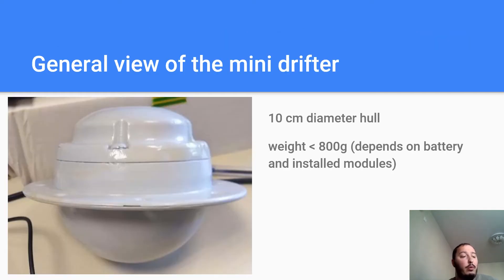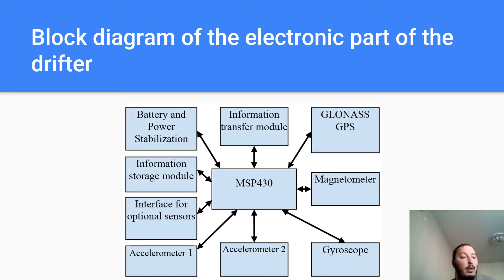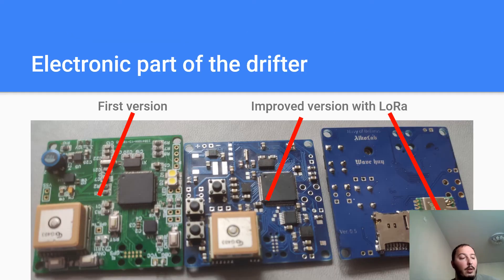The model drifter is made in the form of a waterproof plastic float with a diameter of 10 cm, containing inside the electronic and transceiver modules, a battery, and a balancing weight for stability. The drifter's electronic circuit is based on an energy-efficient high-performance microcontroller and includes two highly sensitive 3-axis MEMS accelerometers, a gyroscope, a magnetometer, a GLONASS/GPS global positioning module, several ports for connecting additional sensor channels such as a temperature sensor, an information transfer module, a power-supply stabilization unit, and an information storage and recording unit.